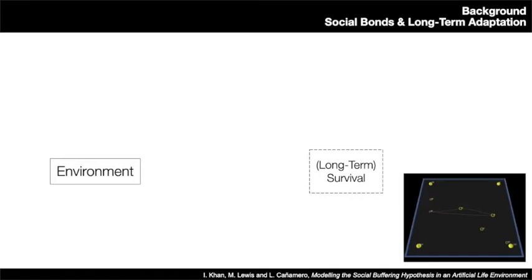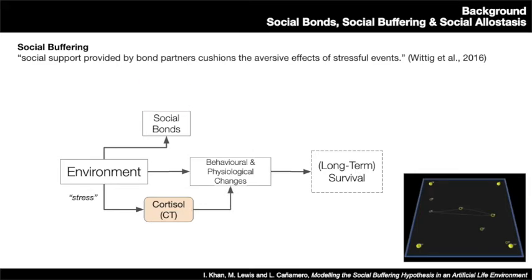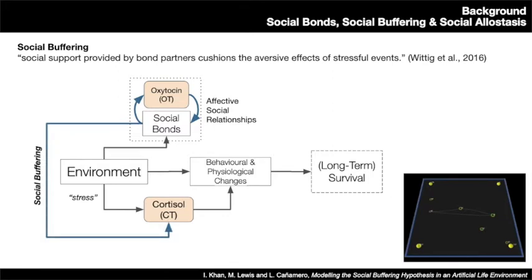Long-term survival in challenging dynamic environments is underpinned by behavioural and physiological changes — what we would call adaptation. Individuals who form and maintain close social bonds are seen to live longer, healthier lives, although the underlying mechanisms are still not clear. Our research is interested in understanding how the social environment can facilitate adaptation to changing environments, and one way social bonds are hypothesised to play a role is through social buffering.